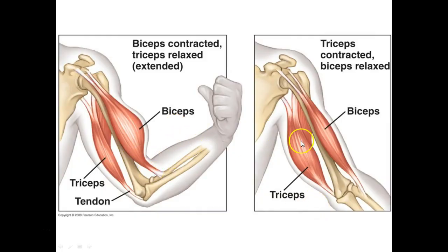Here we can see muscle pairs working in opposition to each other. The bicep is going to pull the arm up as the tricep relaxes. When you're pushing your arm down, like doing a push-up, the tricep contracts and pulls in the opposite direction while the bicep relaxes. If you were to flex both at the same time, your arm essentially would not move because they're working in opposition to each other.